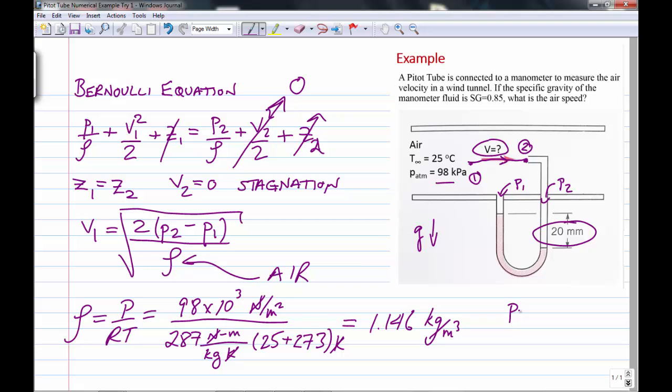We're going to calculate p2 minus p1 just using our manometer relations, which was the gamma of the manometer fluid times this height, which is 20 millimeters. Remember that comes from chapter 2. So let me just scroll to a new page so we can continue.